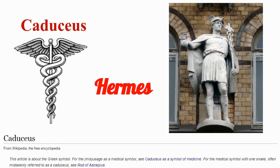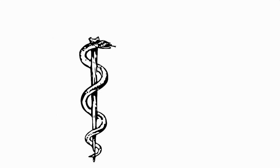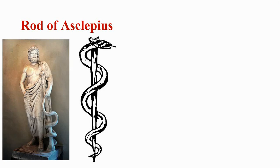So Hermes was considered as the God of harmony, commerce, and trade. In 1902, the US Army mistakenly used this Caduceus symbol as the symbol of medicine. From then on, many parts of the US started using it as the symbol of medicine, and eventually many parts of the world also started using it as a symbol of medicine.